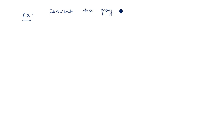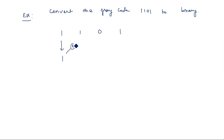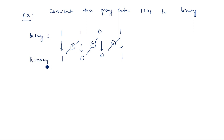Example: convert gray code 1101 to binary — the same previous example in reverse. The first digit is as-is: 1. Second digit: 1 XOR 1 = 0. Third digit: 0 XOR 0 = 0. Fourth digit: 0 XOR 1 = 1. Result is binary 1001, which is decimal 9. We got the correct answer. This is the conversion of binary to gray code and gray code to binary.